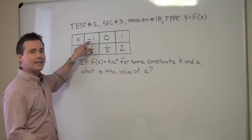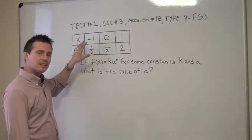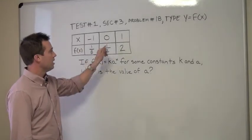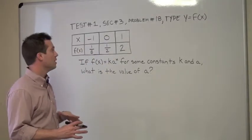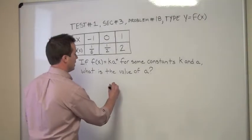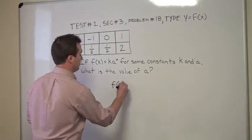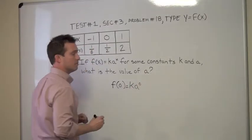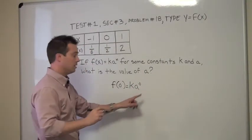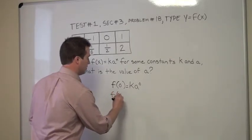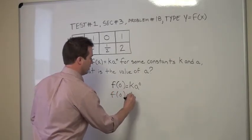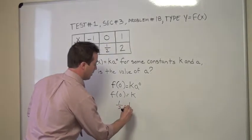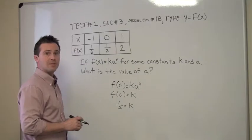Right off the bat I see a negative and I see an eighth — those numbers are going to be a little harder to use. However, zero is often going to help us get rid of a variable, so I'm going to start with zero. So f of zero is going to be k times a to the zero. Now anything raised to the zero power is one, so f of zero is going to equal k. They told us f of zero was one-half, so now I know that one-half is equal to k — and I'm halfway there.